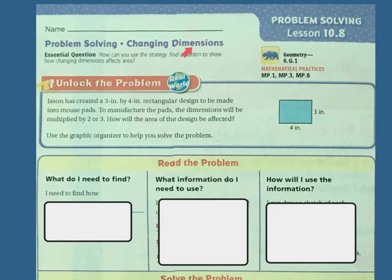Problem solving: Changing dimensions. Our essential question, how can you use the strategy find a pattern to show how changing dimensions affect area? Let's unlock the problem. Jason has created a 3 inch by 4 inch rectangular design that he made into mouse pads. To manufacture the mouse pads, the dimensions will be multiplied by 2 or 3. How will the area of the design be affected? Use the graphic organizer to help you solve the problem.